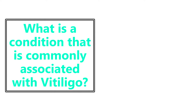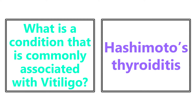What condition is commonly associated with vitiligo? This is going to be Hashimoto's thyroiditis. Vitiligo is an autoimmune condition, and Hashimoto's thyroiditis is also an autoimmune disorder, so there can be an association that you may see on exams.